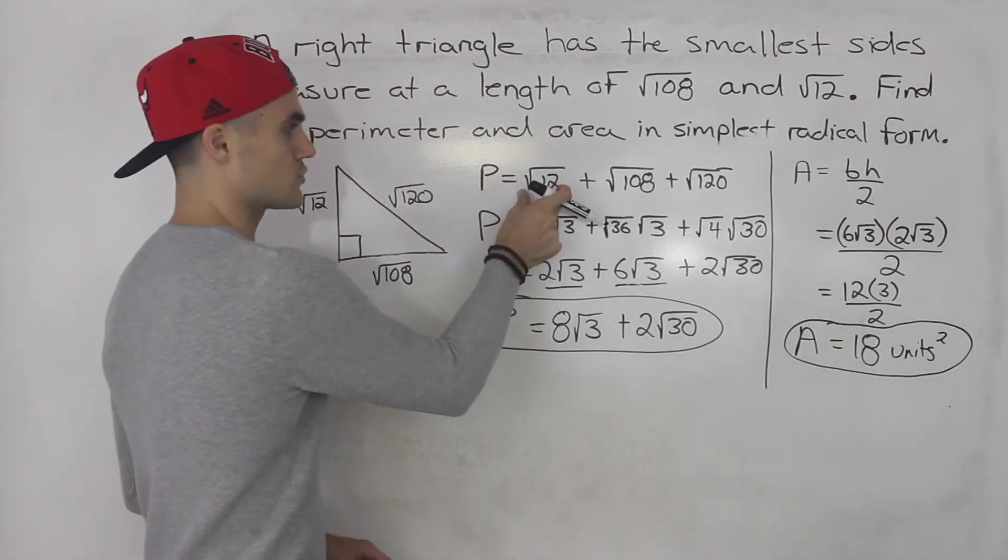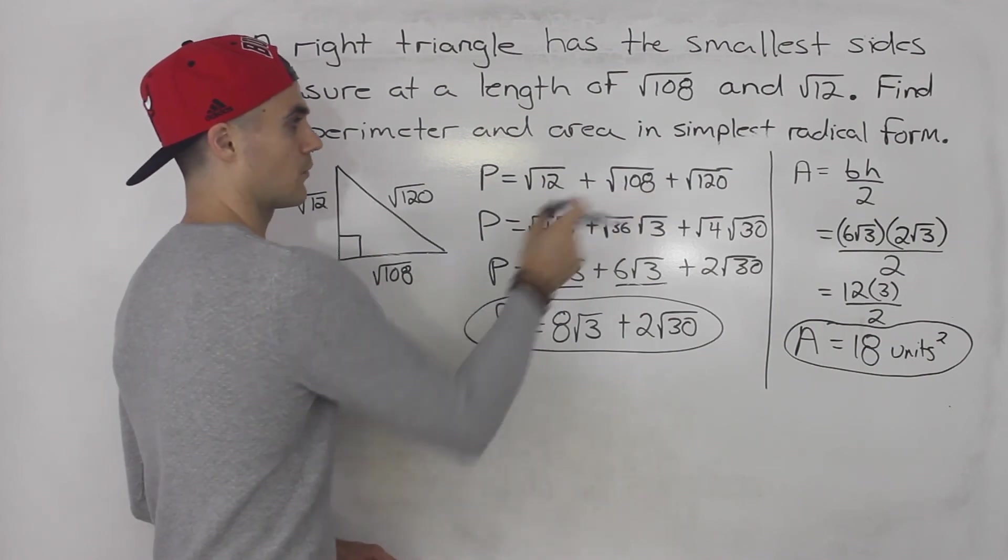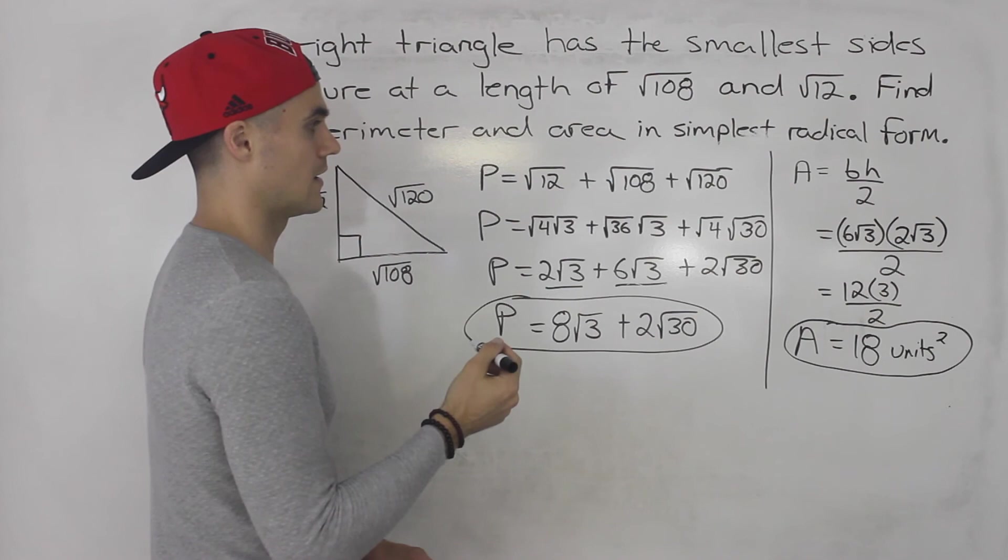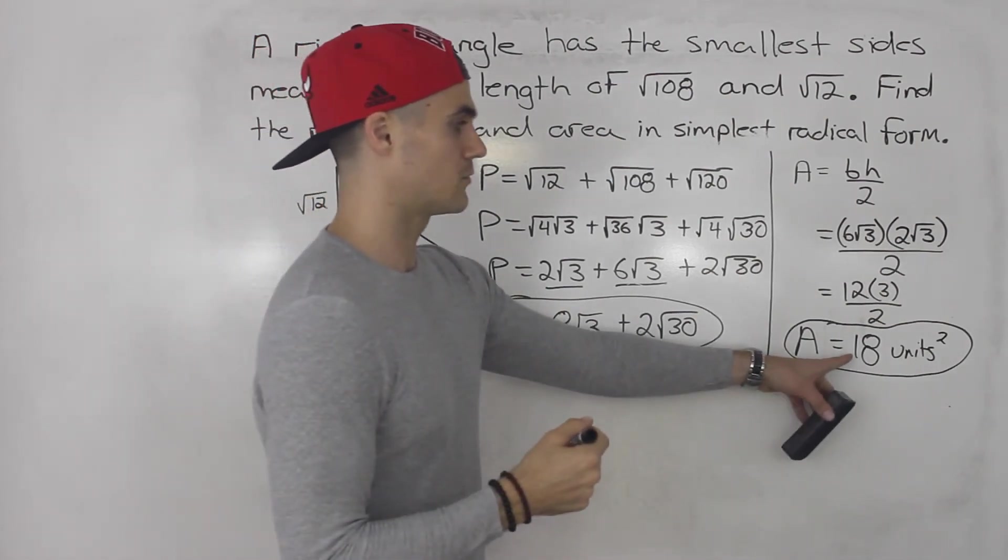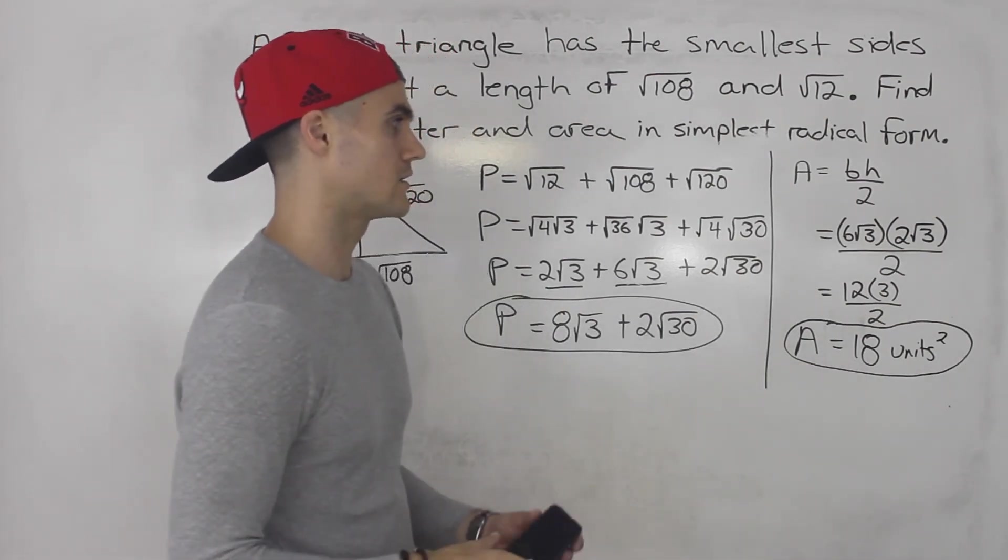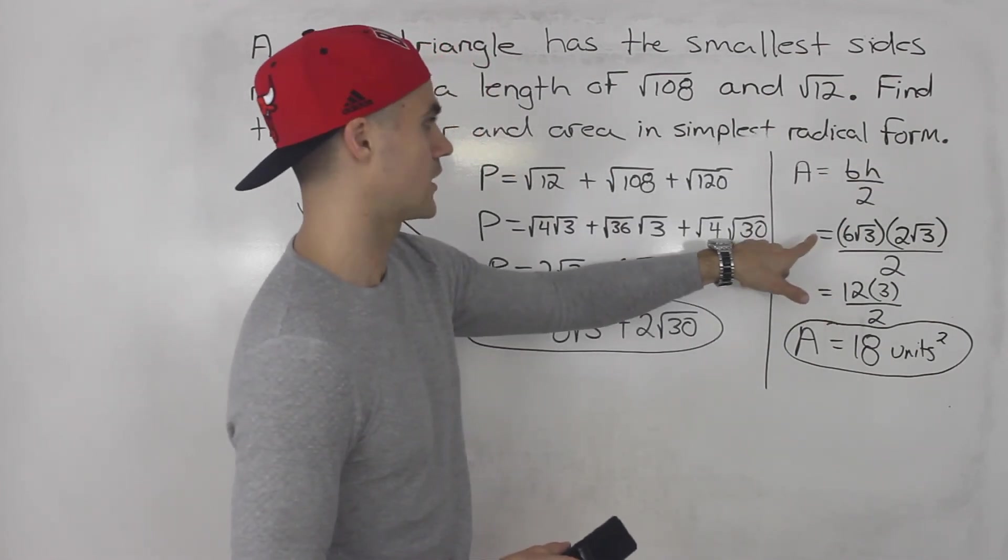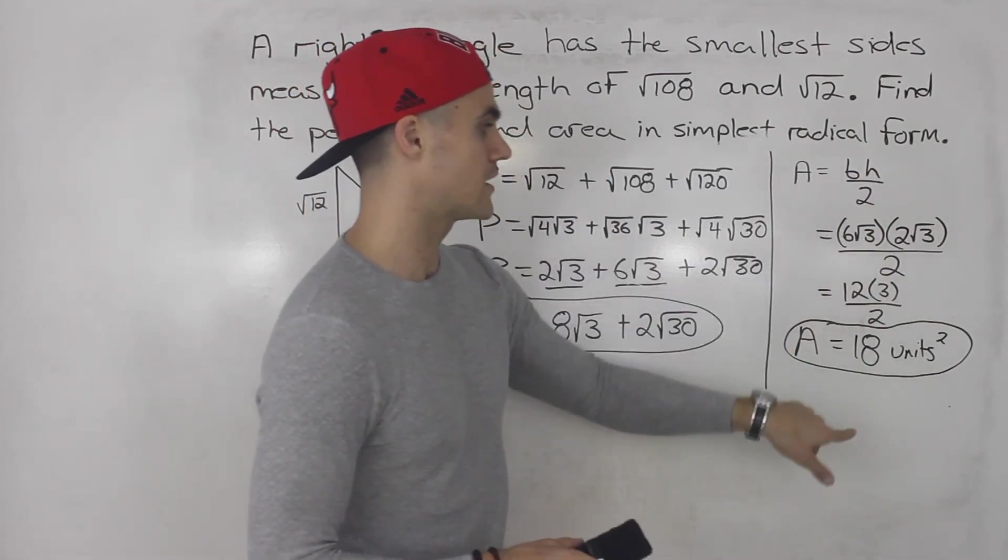Right? So we could have also taken root 12 multiplied by root 108. That would give us some big number, and then dividing it by 2, we would end up with 18. But either way you could plug this whole expression into your calculator, or you could plug in root 12 times root 108 divided by 2. You should end up getting 18 every time.